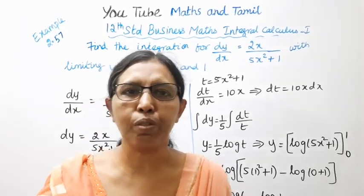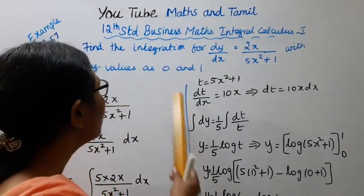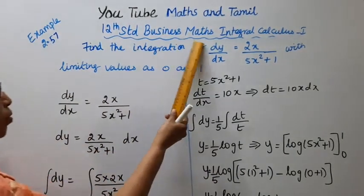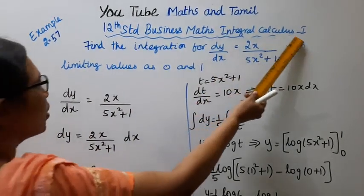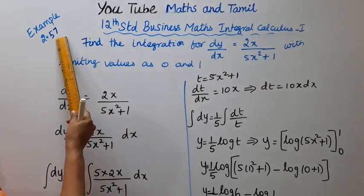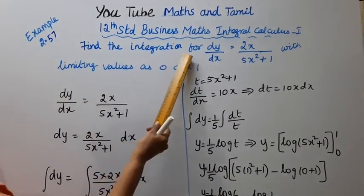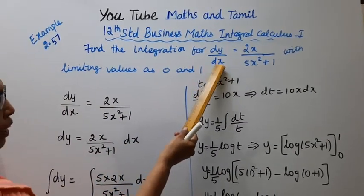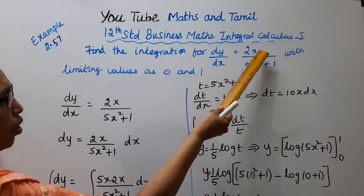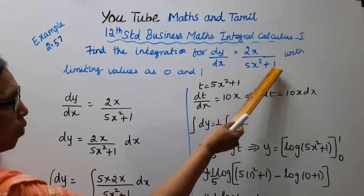Hello students, welcome to Max and Tumult channel. 12th standard business maths integral calculus 1, example 2.57. Find the integration for dy by dx equal to 2x by 5x squared plus 1.